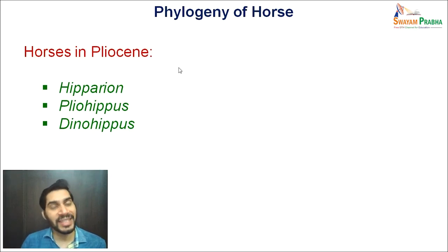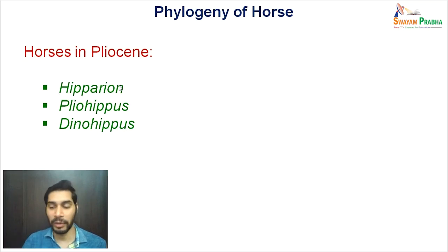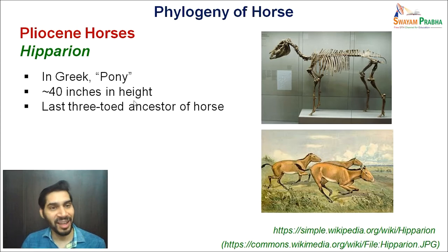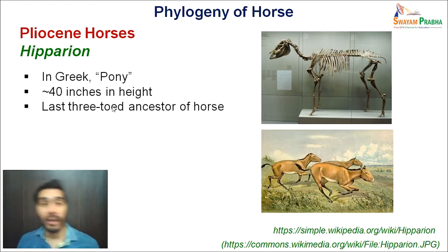Moving ahead, the next epoch is the Pliocene, with examples like Hipparion, Pliohippus, and Dinohippus. The word Hipparion comes from a Greek word meaning pony — a pony being about 40 inches in height. Importantly, Hipparion represents the last three-toed ancestor of horse. Up to Hipparion all forms were three-toed; from Hipparion onwards, single-toed horses appear. Besides increasing in size and other evolutionary trends, this represents the last three-toed ancestor.